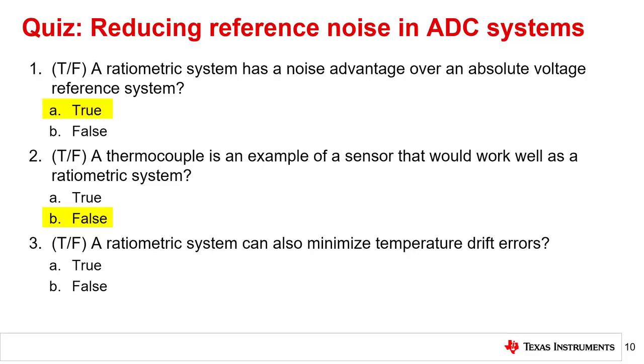Question 3. True or false. A ratiometric system can also minimize temperature drift errors. The correct answer to question 3 is A, true.